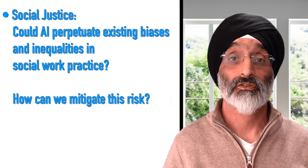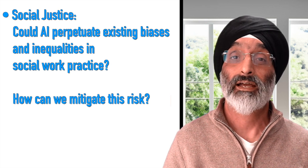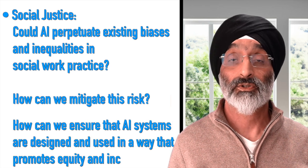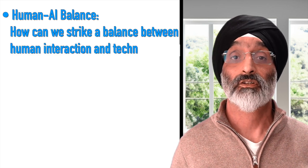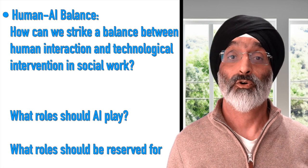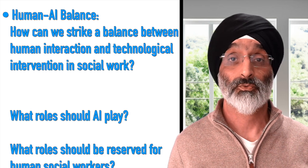To prompt further discussion, we can pose questions such as how can we ensure that AI systems are designed and used in a way that promotes equity and inclusion? Human-AI balance: how can we strike a balance between human interaction and technological intervention in social work? What roles should AI play and what roles should be reserved for human social workers? For example, as a social work educator, I would argue that AI could be used to help social workers identify clients who are at risk of homelessness.